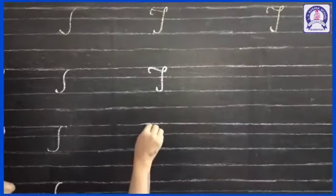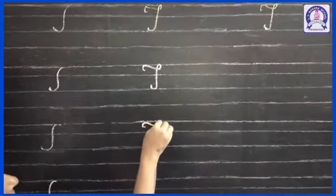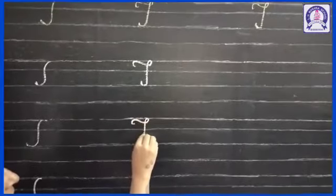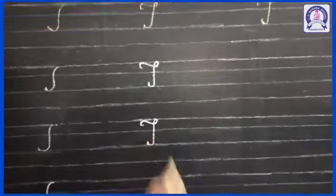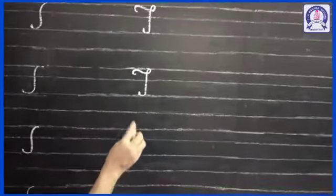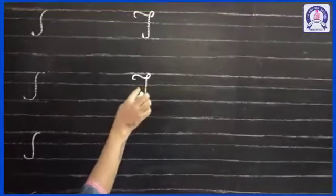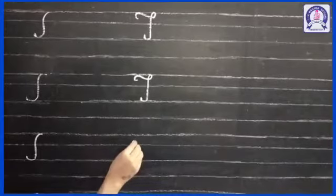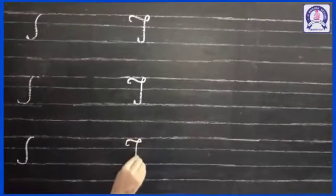And this pattern is like capital cursive F, but we don't have to do here slipping line. Capital cursive T.